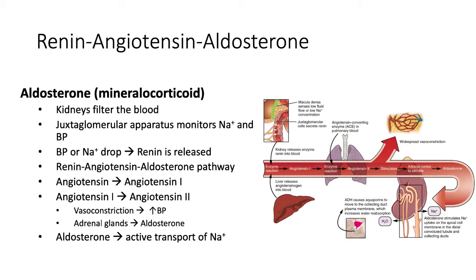The stimulus is low sodium or low blood pressure. The receptor and the control center is the juxtaglomerular apparatus of the kidneys. And we have multiple effectors: hormones, the adrenal glands, and aldosterone. The end result should be a rise in blood pressure and sodium, which will shut off the release of renin.